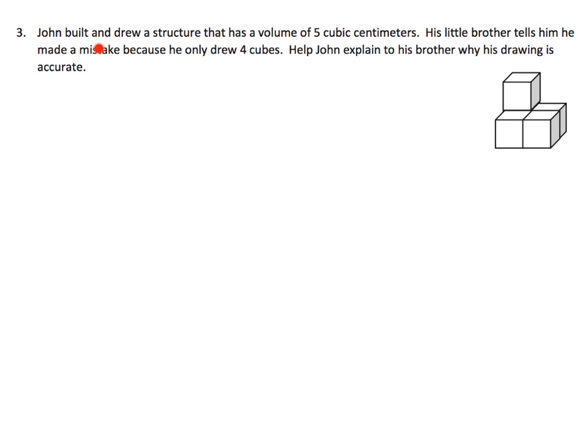On this one, John built and drew a structure that has a volume of five cubic centimeters. Here's the drawing of the figure that John built. His little brother tells him he made a mistake because he only drew four cubes. Help John explain. Well, if you think about it from the little brother's point of view: here's a cube, here's a cube, here's a cube, and back here is a fourth cube. From the little boy's point of view, his answer seems to make sense—yes, there are only four cubes. How could there possibly be five cubes?